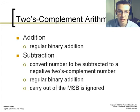Using two's complement with addition is just like regular binary addition. However, subtraction: you convert the number to be subtracted to a negative two's complement number, like a regular binary addition. And then the carry out of the MSB is ignored with this type of subtraction.